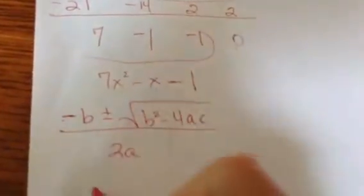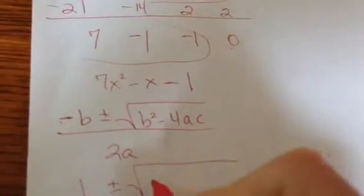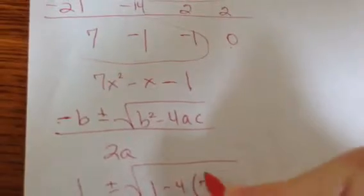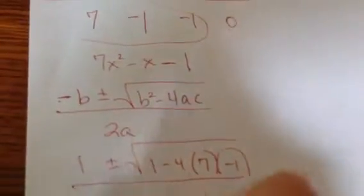Here, b is negative 1. The opposite of negative 1 is positive 1. b squared would be 1. a is 7. c is negative 1. All over 2 times a. a is 7.